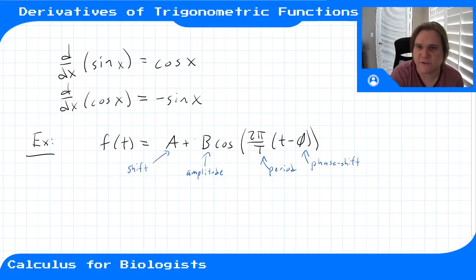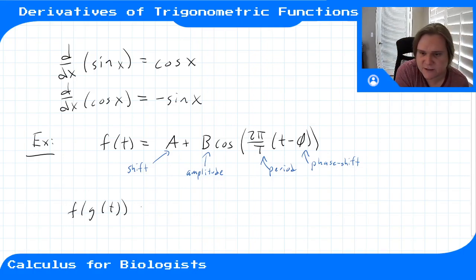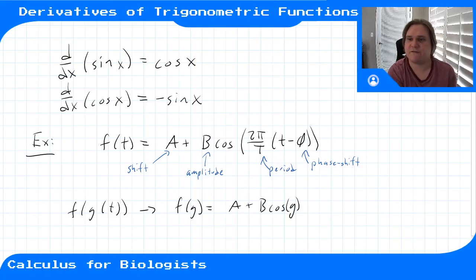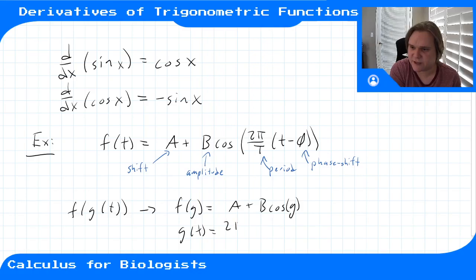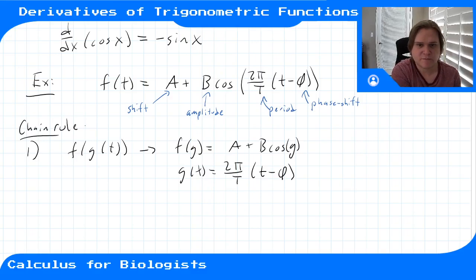If we were to take the derivative of this function, we'll have to use the chain rule. Step 1 is to rewrite this as f of g of t, where f of g is a plus b cosine of g — the stuff on the outside — and g of t is the stuff on the inside of the cosine, so 2π over T times t minus b.